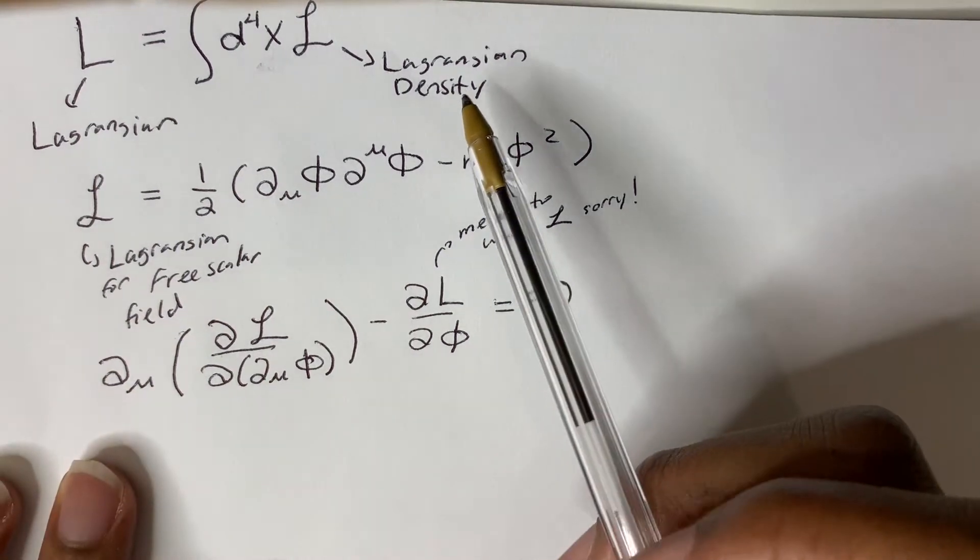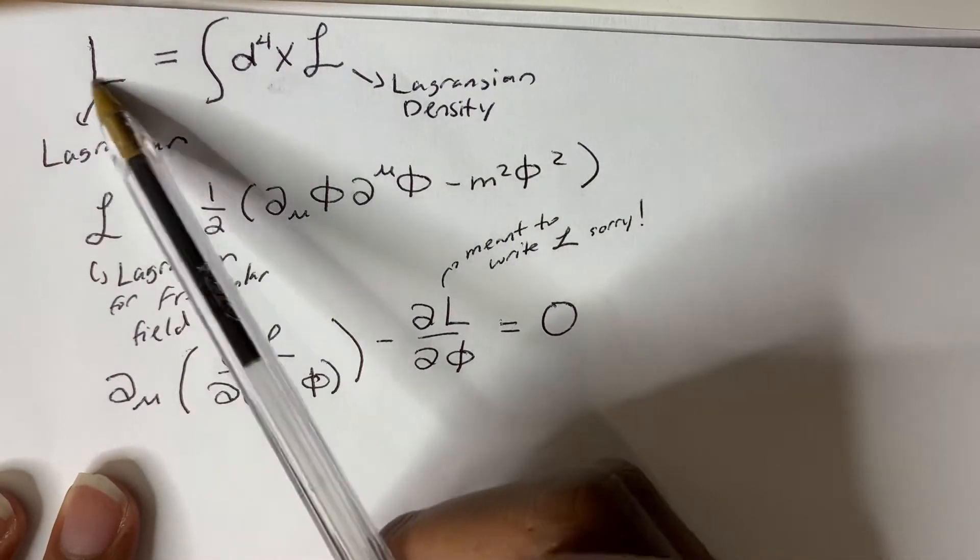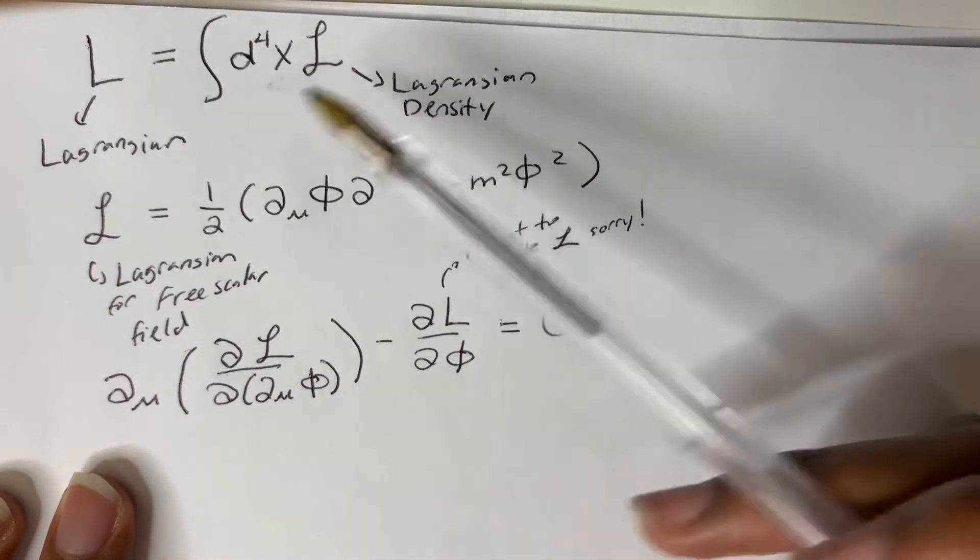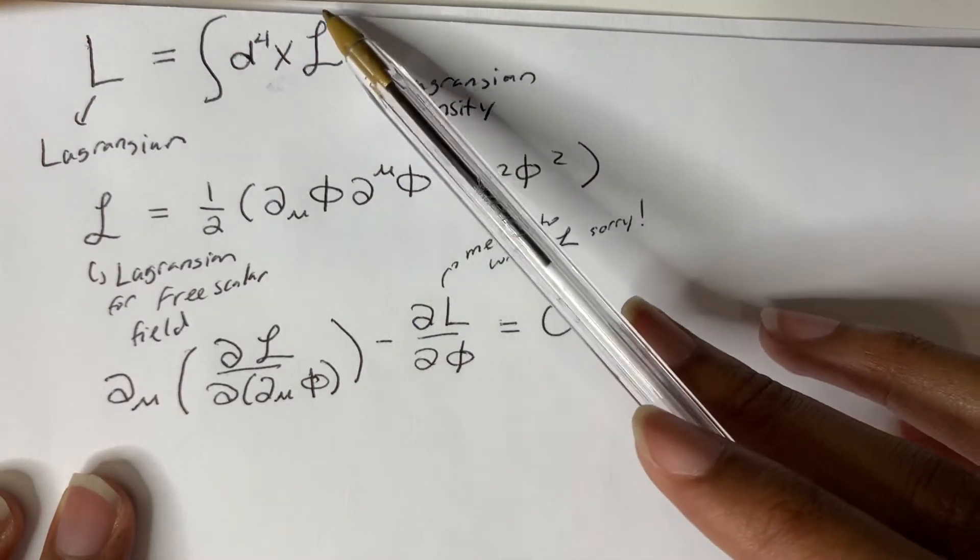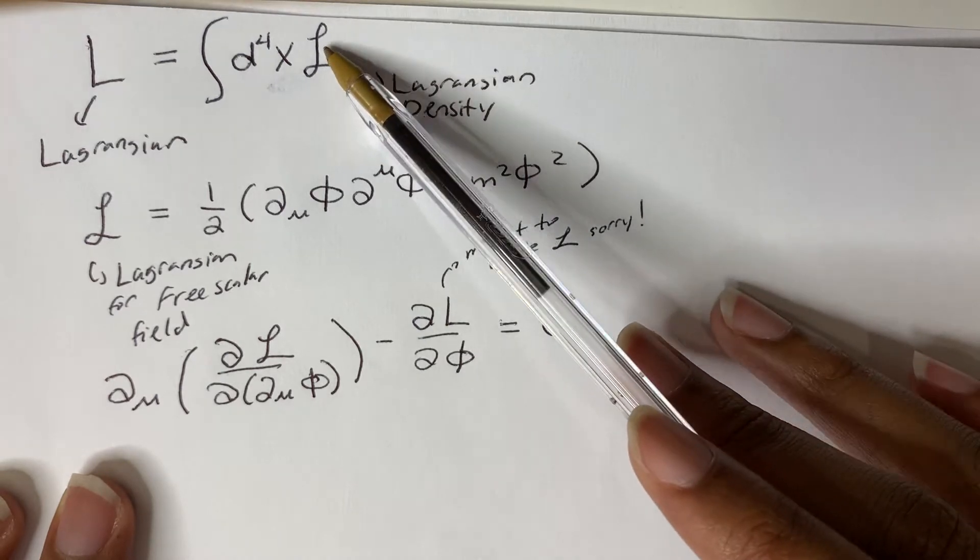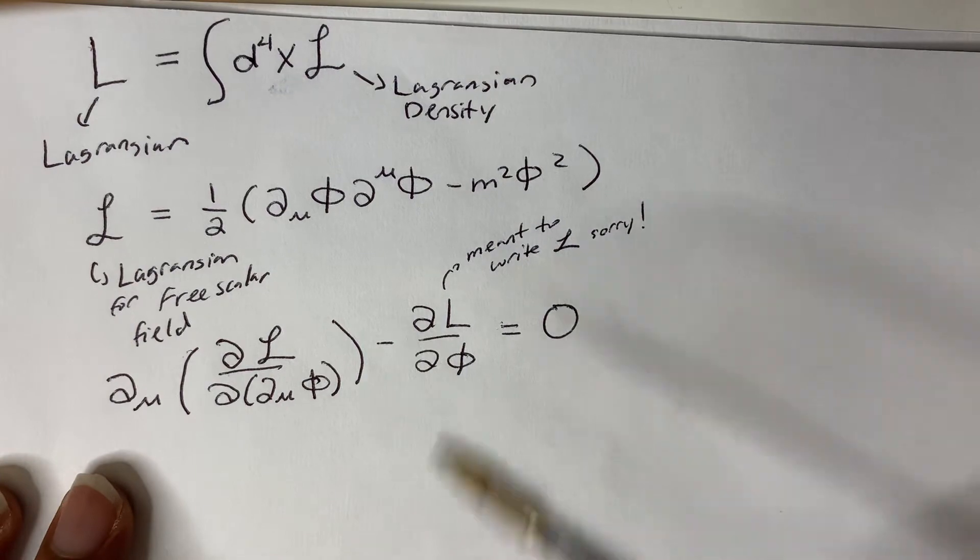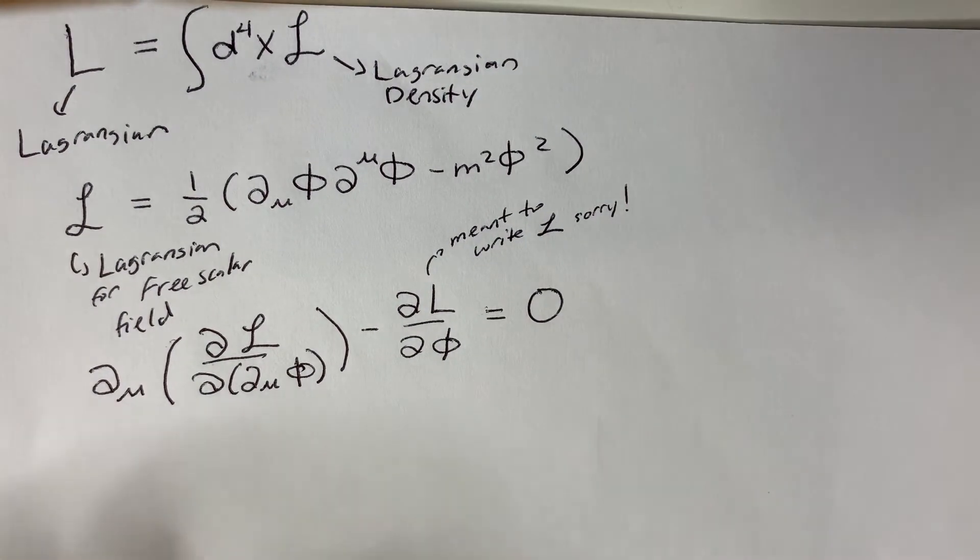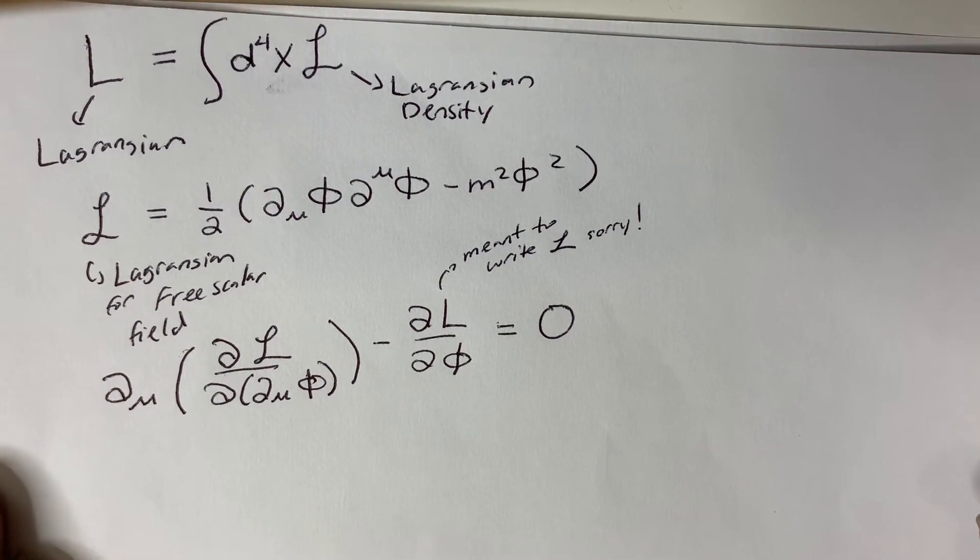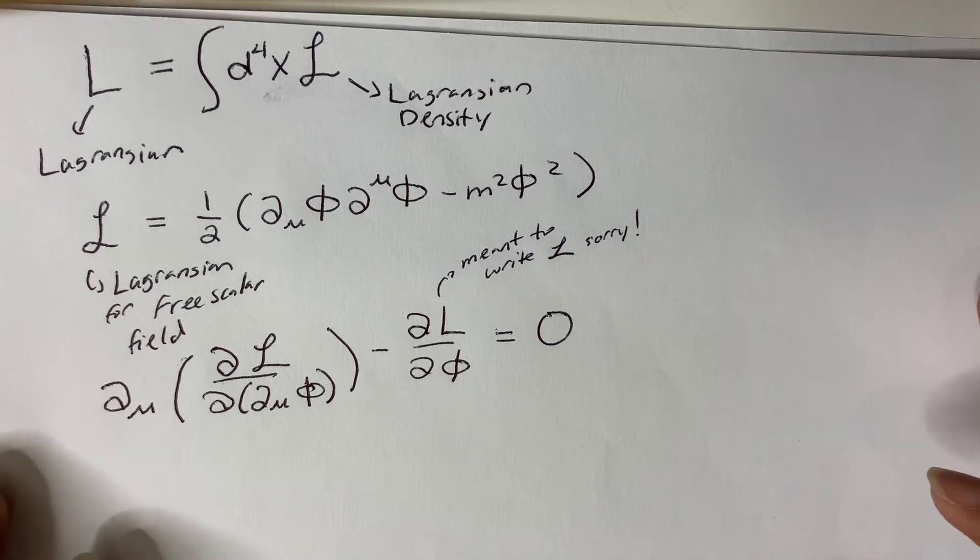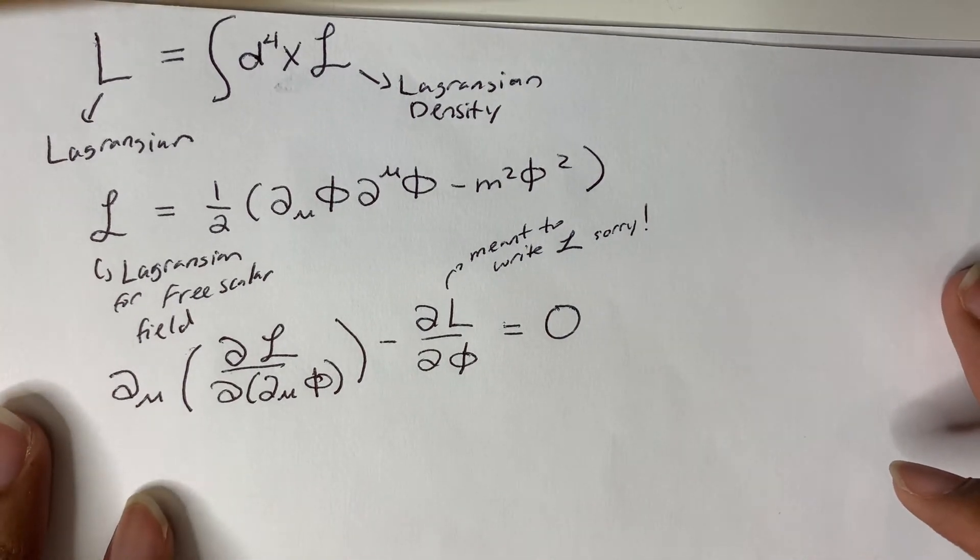Now, if you can recall, the Lagrangian is the integral of what we call the Lagrangian density. And the Lagrangian is a functional that gives us equations of motion. What I just said shouldn't be new to you. If it is new, I recommend watching my video on an Introduction to Lagrangian Mechanics.